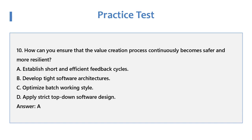Question 10: How can you ensure that the value creation process continuously becomes safer and more resilient? A. Establish short and efficient feedback cycles. B. Develop tight software architectures. C. Optimize batch working style. D. Apply strict top-down software design. Answer: A.